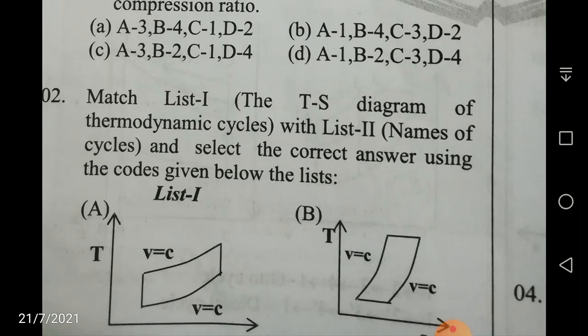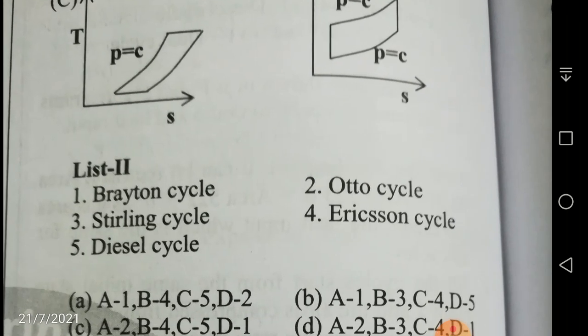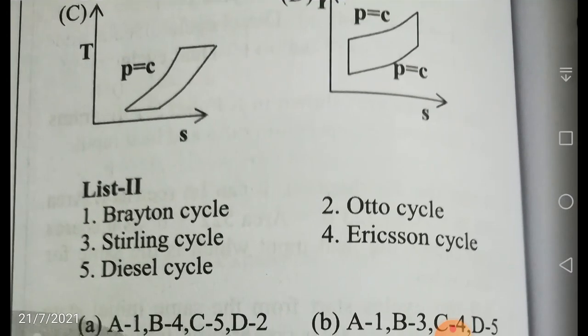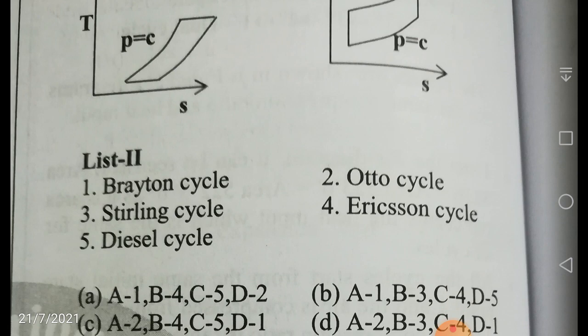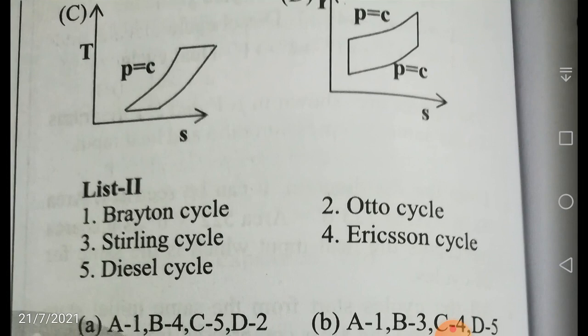In the TS diagram, 1 to 2 is reversible adiabatic compression, then heat addition, then expansion, then heat rejection. Similarly, cycles B, C, and D are also given. The list 2 has: Brayton cycle, Otto cycle, Stirling cycle, Ericsson cycle, and Diesel cycle. In the Brayton cycle on the TS diagram: 1 to 2 is reversible adiabatic compression, 2 to 3 is constant pressure heat addition, 3 to 4 is reversible adiabatic expansion, and 4 to 1 is constant pressure heat rejection.